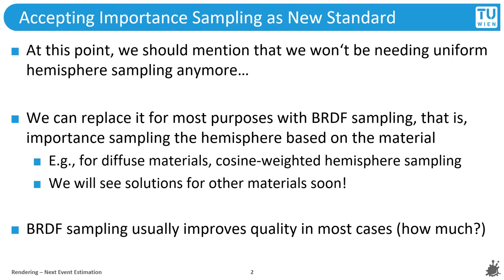From this point on there is no real need anymore to use uniform hemisphere sampling. Instead we will use BRDF sampling as an umbrella term for importance sampling the directions in the hemisphere that make the most sense for a given material. So far we only have diffuse materials, but BRDF sampling will always refer to a material's proper importance sampling technique of its BRDF, because we generally expect it to perform better than naive uniform sampling. We previously saw a few examples of how BRDF sampling can improve image quality.